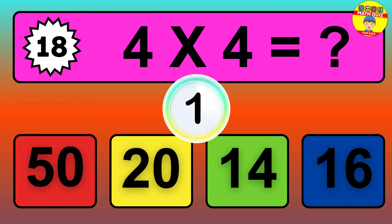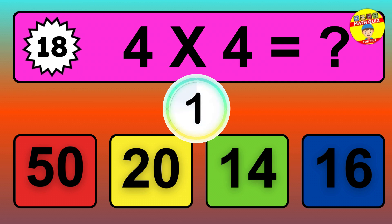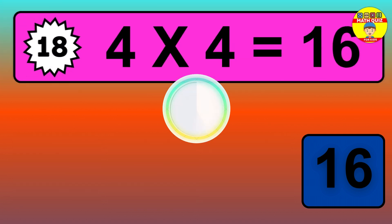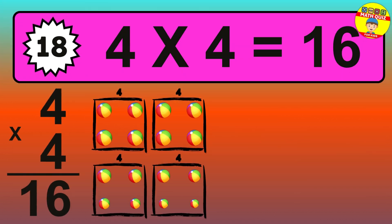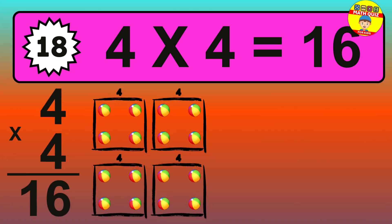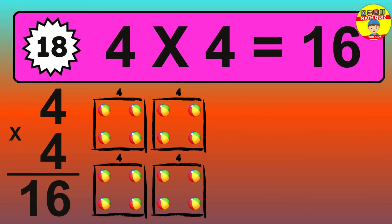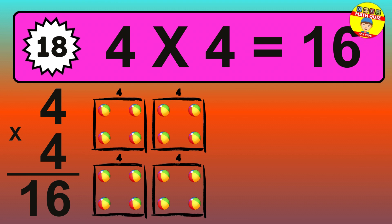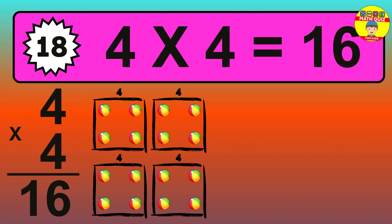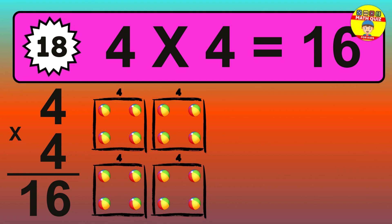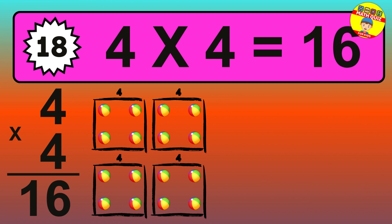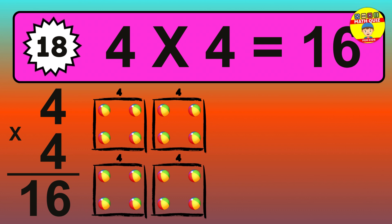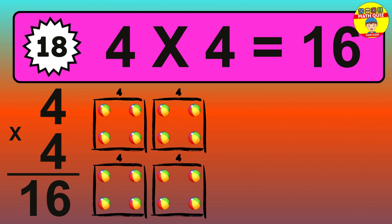Question 18. The answer is 4 times 4 is 16. To calculate, we have 4 groups with 4 balls each one. So, how many balls do we have? 16 balls.